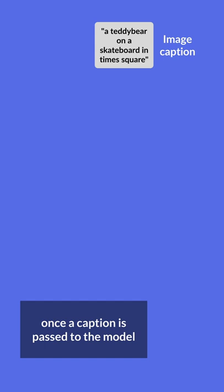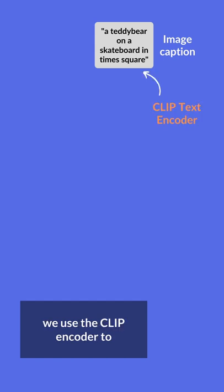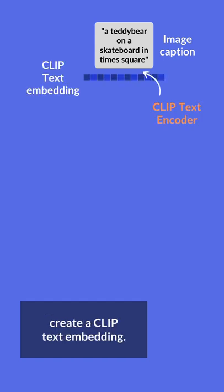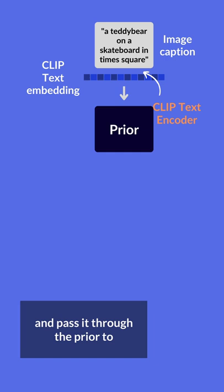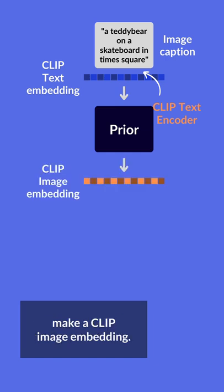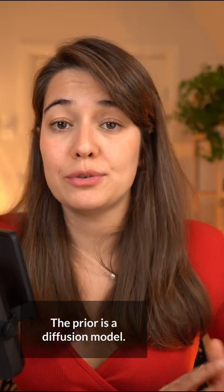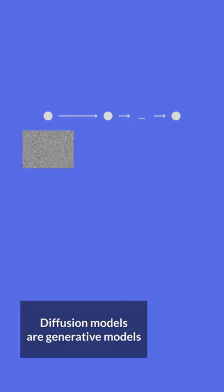In the first part of DALL-E 2, once a caption is passed to the model, we use the CLIP encoder to create a CLIP text embedding and pass it through the prior to make a CLIP image embedding. The prior is a diffusion model.